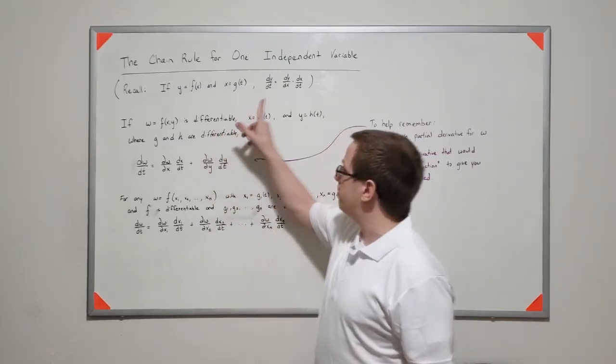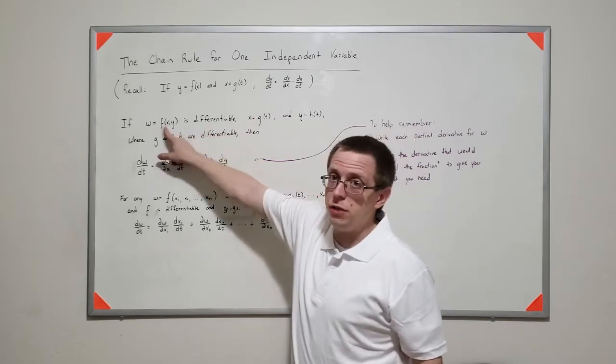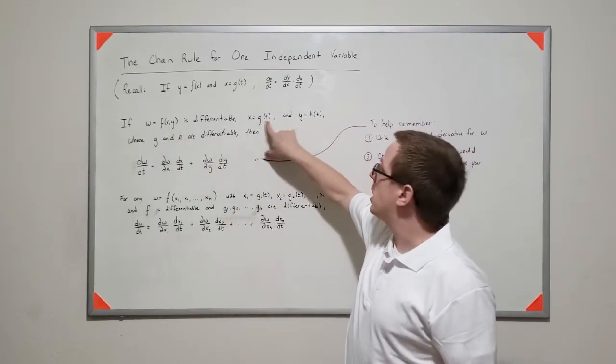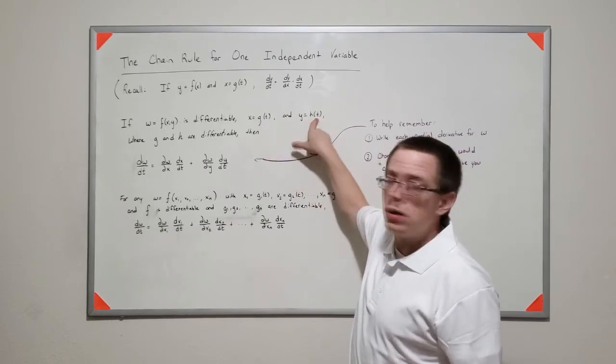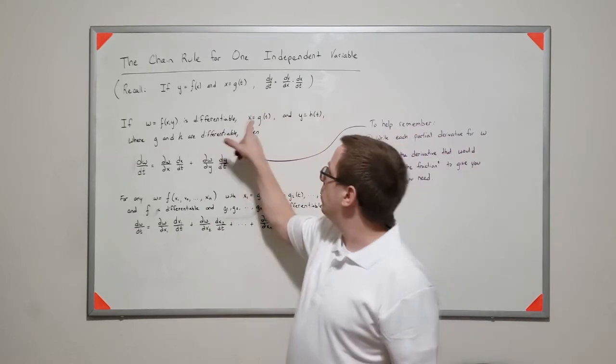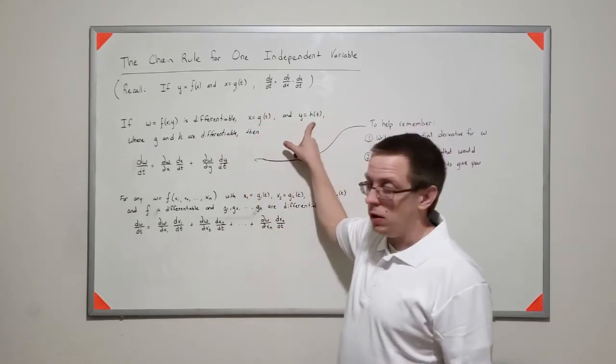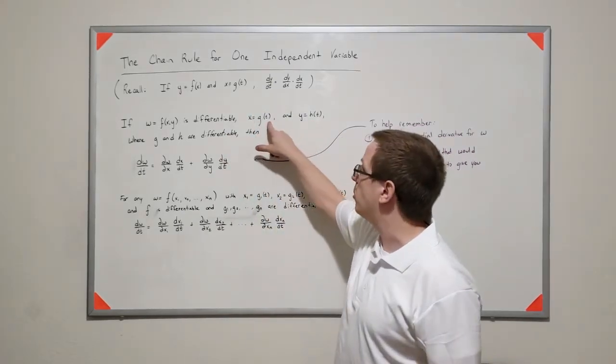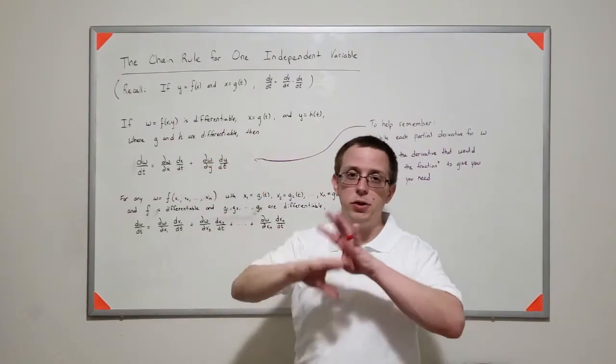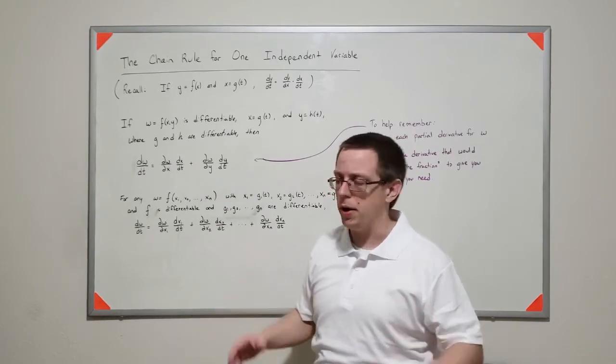So if this function is differentiable, but for each of those variables they can be parameterized by some t, and then those functions that the parameter is passed to are themselves differentiable. So basically just derivatives exist all over the place, right?